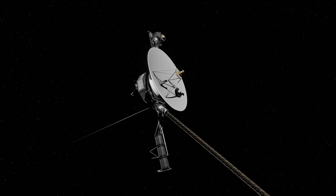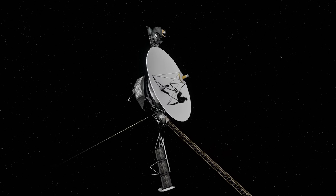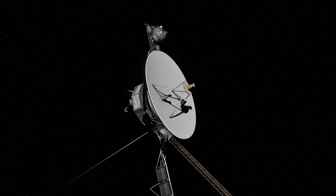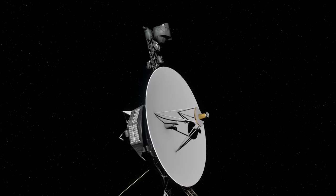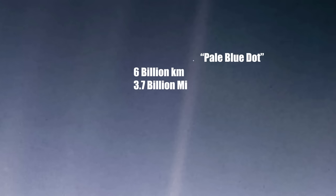In 1990, at the suggestion of the renowned astronomer Carl Sagan, Voyager 1 turned its camera back towards Earth for one final photograph. This resulted in the iconic pale blue dot image. At a distance of about 6 billion kilometers from Earth, our planet appeared as a tiny, faint dot in the vastness of space.